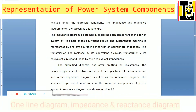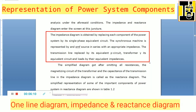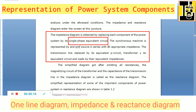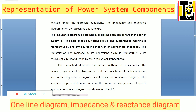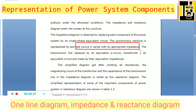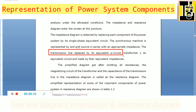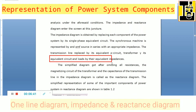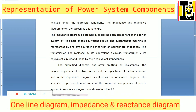The impedance diagram is obtained by replacing each component of the power system by its single phase equivalent circuit. The synchronous machine is represented by an EMF source in series with appropriate impedance. The transmission line and transformer are replaced by their equivalent circuits, and the loads are replaced by their equivalent impedances.